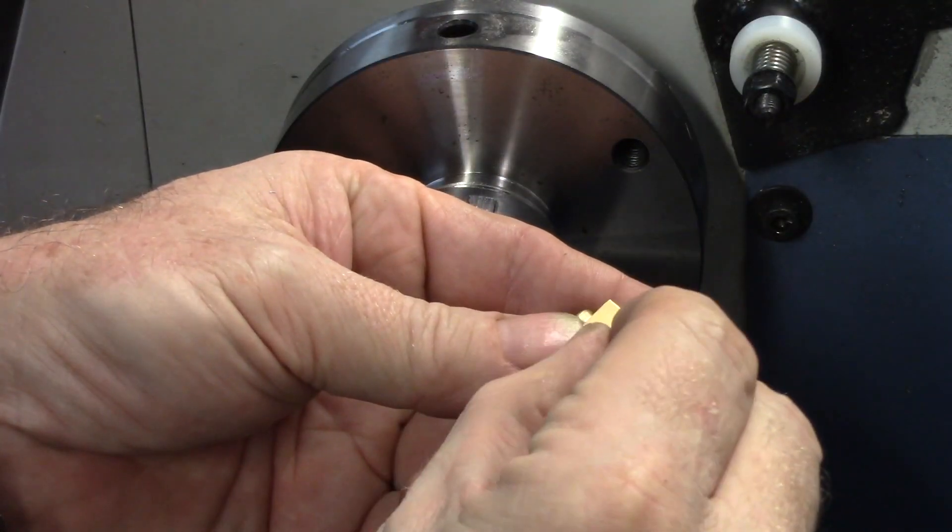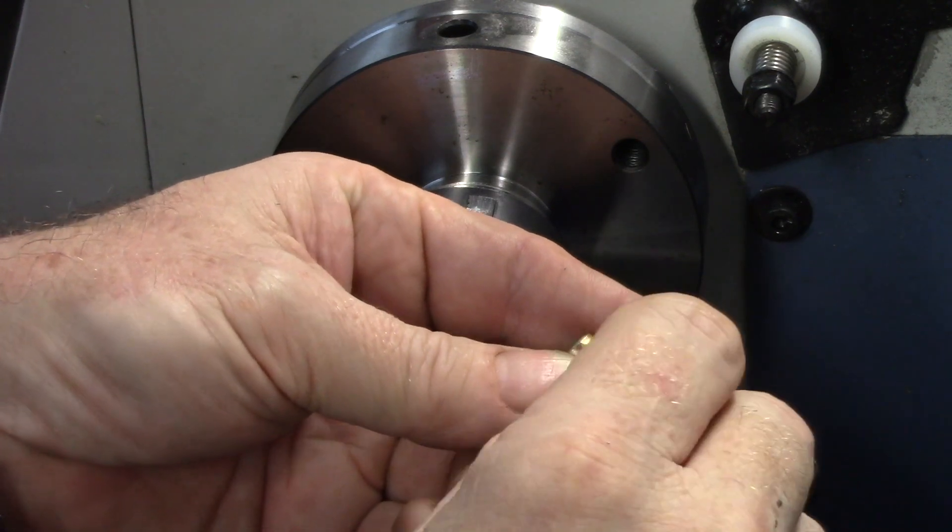The axial pivot pin allows the cylinder and block to swivel against the engine's port block.